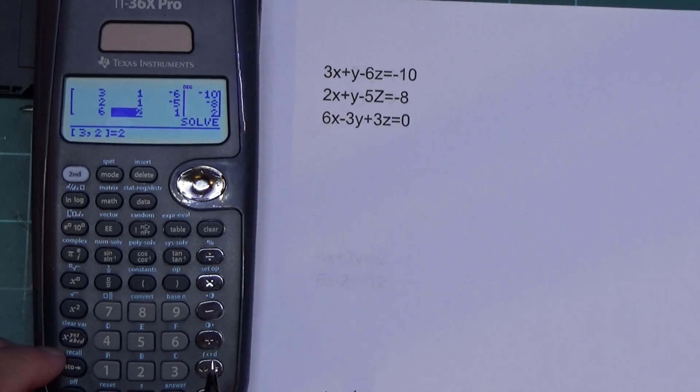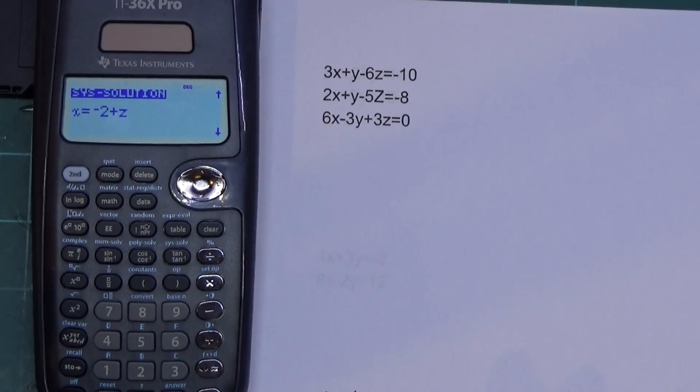So then it's 6, enter, negative 3, enter, 3, enter, and 0, enter. And I'm going to hit solve. Now it's doing something different here.